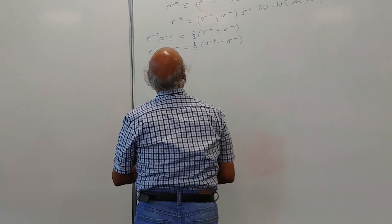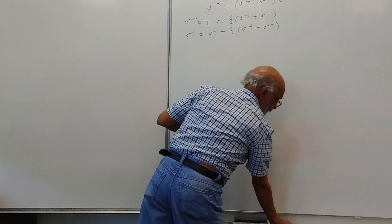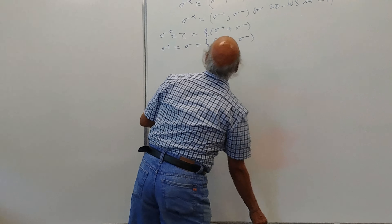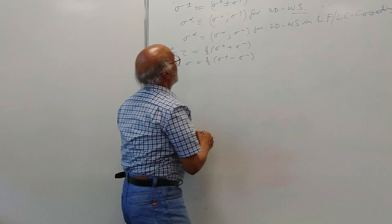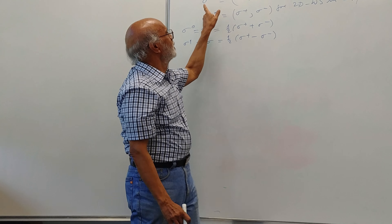Sigma zero is tau, which is one half of sigma_plus plus sigma_minus, and sigma one would be one half of sigma_plus minus sigma_minus.